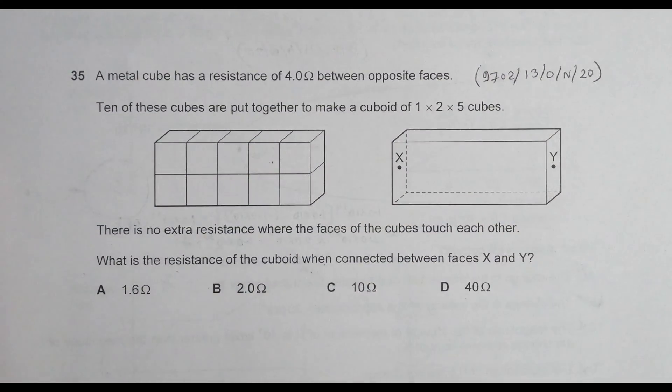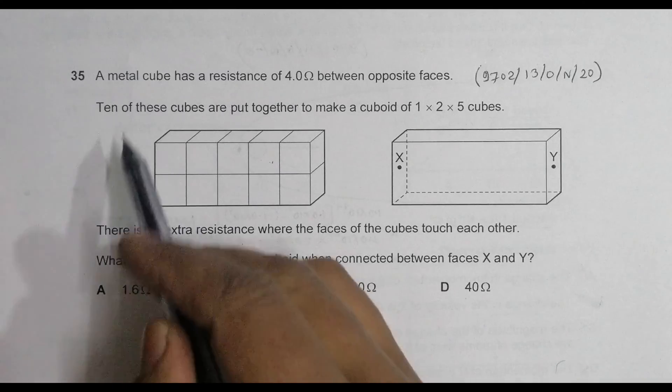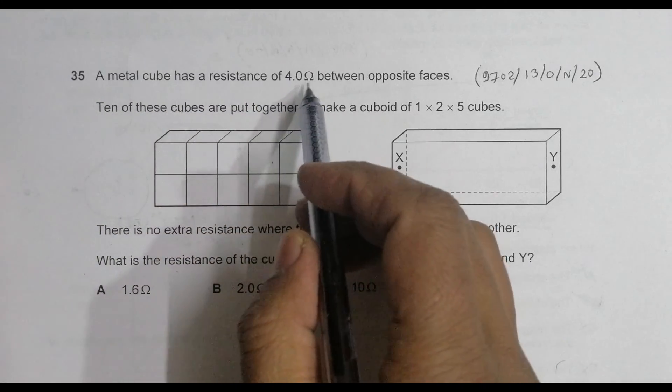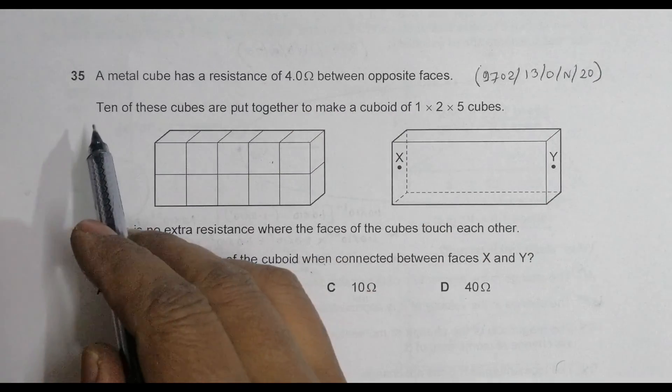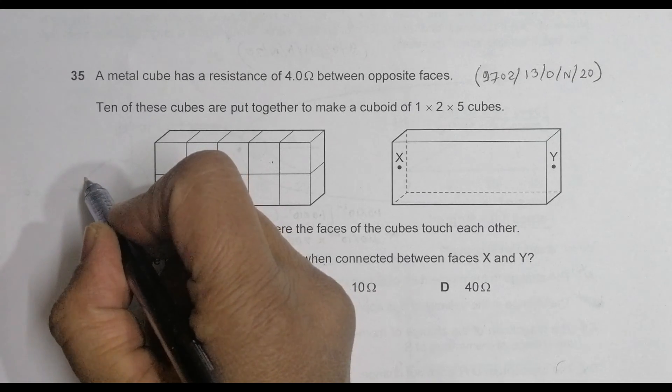Hello folks, this is 2020 October November paper one three, and the question number is 35. It is concerned with the chapter current electricity. As you can see from the diagram, it is said a metal cube has a resistance of 4.0 ohm between opposite faces. Ten of these cubes...